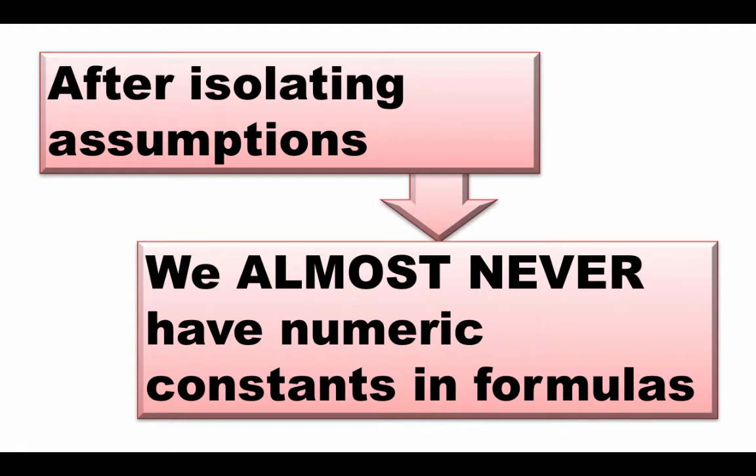I say almost never, right? Because after all, you need to isolate only those assumptions that are liable to change. Like for example, the price of an SD card, right? Or let's say the hourly salary for a worker. These are things that can change and therefore putting them in their own cells makes a lot of sense. But there are certain other numbers, constants, that are not liable to change, right? So, for example, there are seven days in a week.